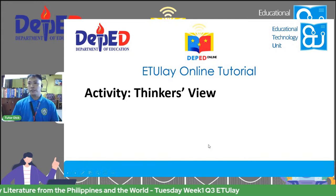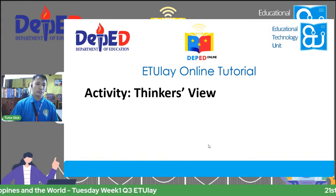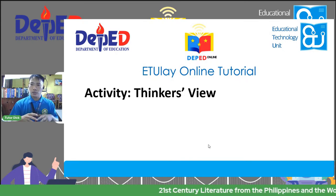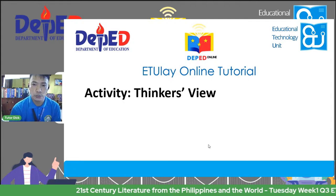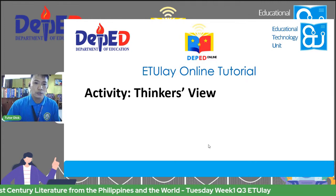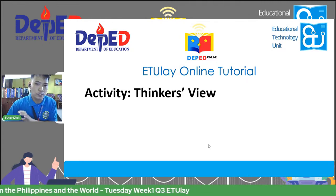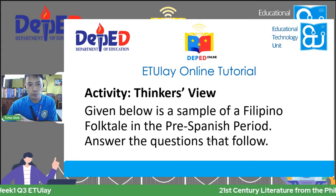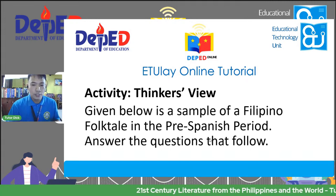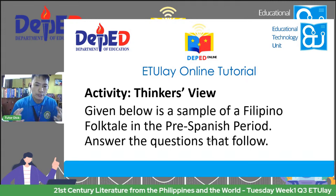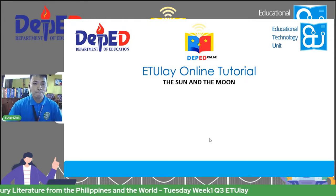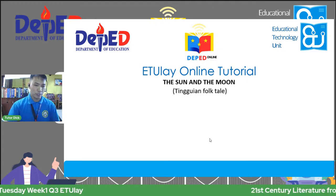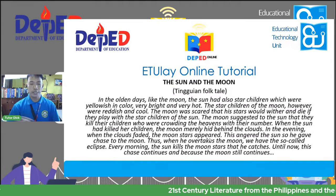Now, we'll have a little activity called the Thinker's View. This will now be our second objective for today, which is to write or conduct a close analysis or critical interpretation of a certain text. We'll be having a sample of Filipino folktale in the pre-Spanish period. After we read, we're going to answer the questions to follow. This folktale is entitled 'The Sun and the Moon' — it's a Tingian folktale.